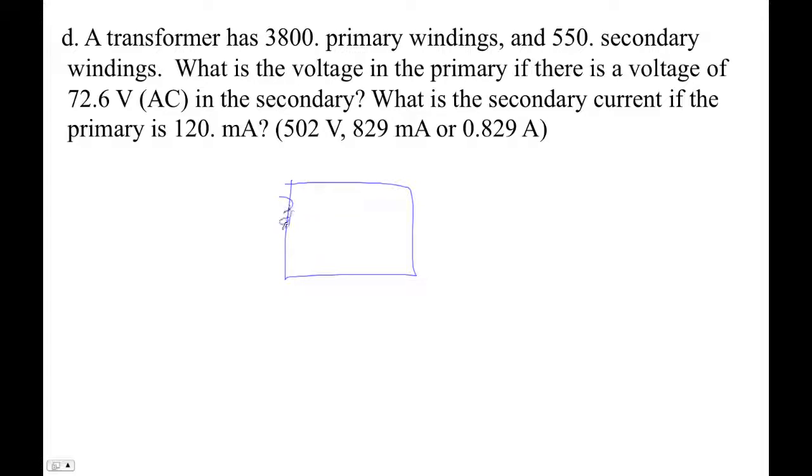It has 3,800. N equals 3,800. That's our primary. And then our secondary, I'm not going to draw all of them. N secondary is 5,500. Oh, 550. Sorry. Secondary windings.